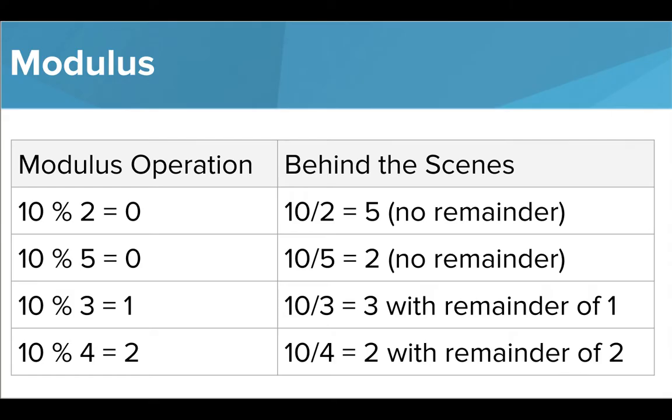For example, if I wrote 10 modulus 2, my remainder would be 0 because 10 evenly divides into 2. Similarly, if I write 10 modulus 5, my remainder is still 0. But if I write 10 modulus 3, my remainder is 1, so that will be the value given from this expression. If I wrote 10 modulus 4, I'd be left with a value of 2 because that is my remainder. We'll use this operator in a future example to practice with it further.